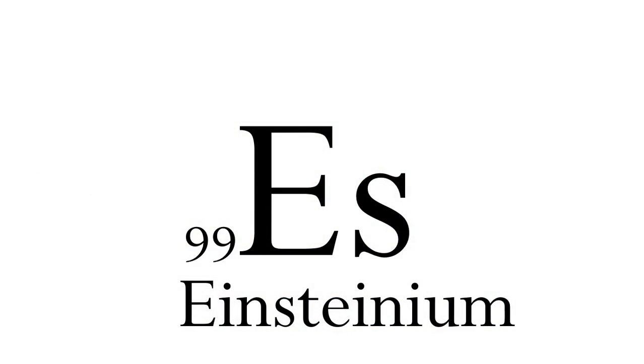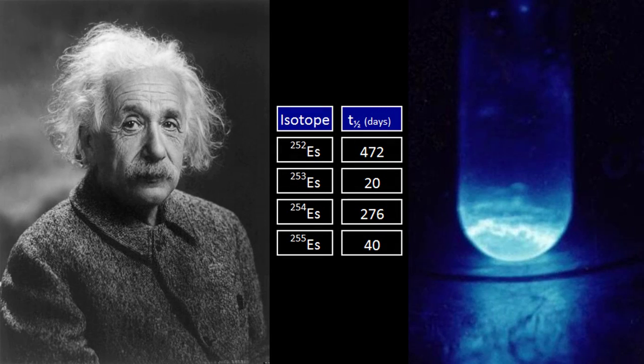Ninety-nine is Einsteinium, obviously after Albert Einstein, first identified in the debris of the early atomic bomb tests such as Ivy Mike. The most stable isotope is Einsteinium-252, with a half-life of just over a year. Einsteinium is the last element that has been produced in quantities that can be observed directly. Einsteinium is a silvery metal that glows blue in the dark because of its intense radioactivity.